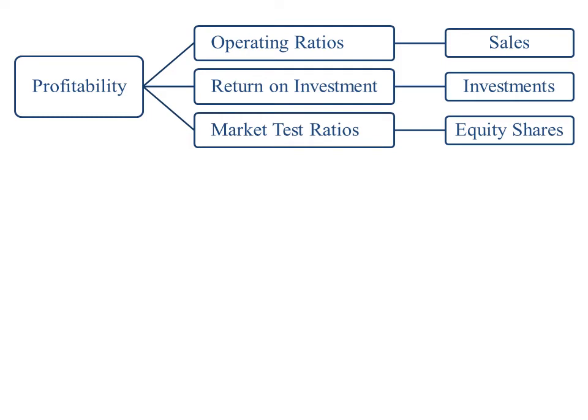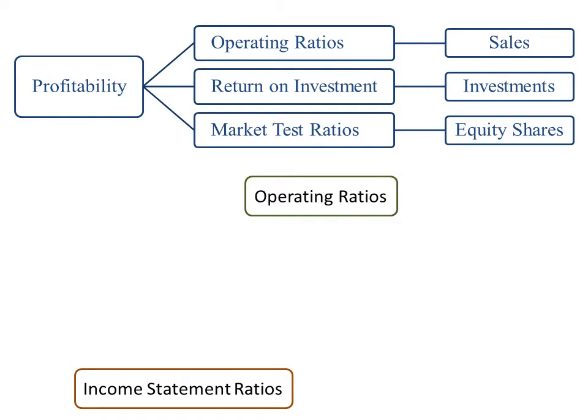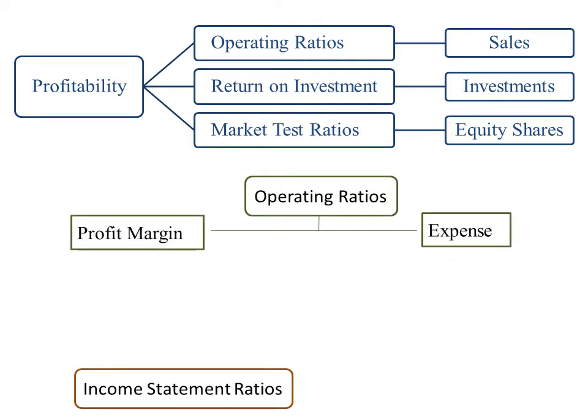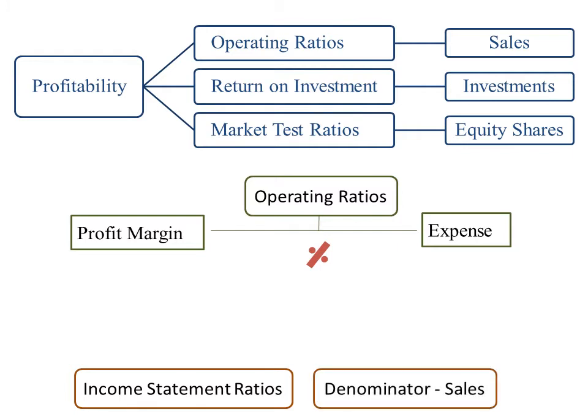Talking about operating ratios, these ratios are formed on the principle that a firm must earn adequate profit on each rupee of sales. These ratios are calculated based on the information available in the income statement. Therefore, these ratios are also known as income statement ratios. These ratios consist of profit margin and expense ratios, and are calculated as a percentage of sales — meaning the denominator is always sales.